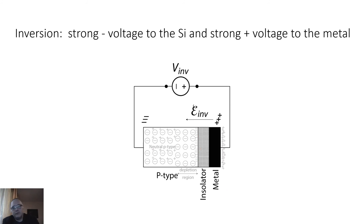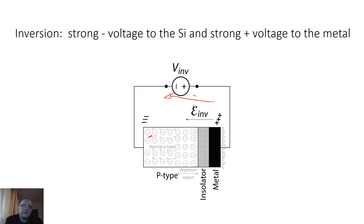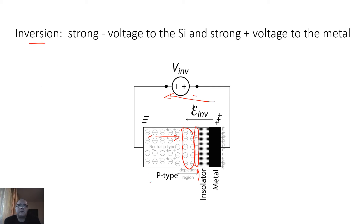Now we increase the magnitude of the electric field — we apply in the same direction but a stronger electric field, so the externally applied voltage is now much stronger. The field is so strong that it exercises force on the minority carriers in the p-type semiconductor. The minority carriers are the electrons; they feel the force of the electric field and move against it in this direction, so that they now pile up at the interface with the insulator.